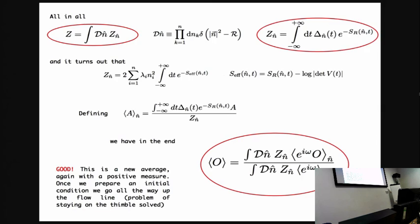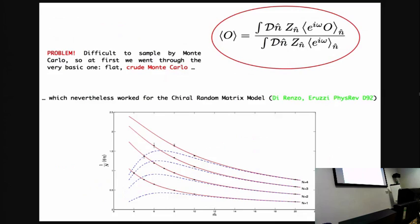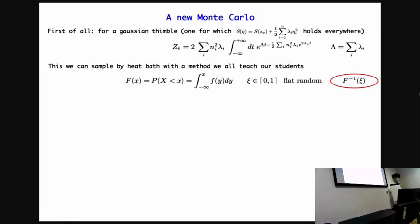But of course it is a funny measure. Still, as funny as it is, we start with crude Monte Carlo and even with crude Monte Carlo in this representation, we could solve the chiral random matrix model. Now the point is, can you do better than this and go for a Monte Carlo sampling this measure? The answer is yes.